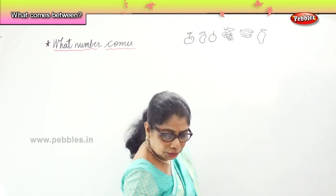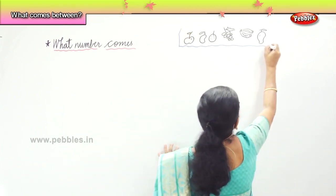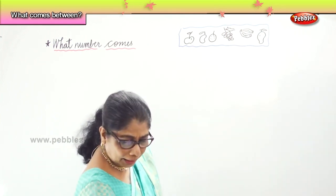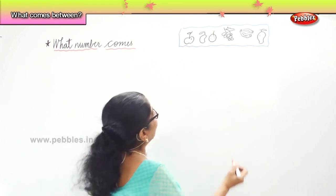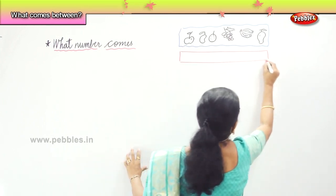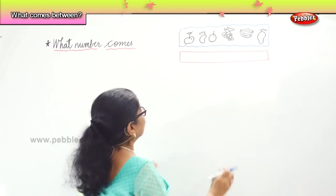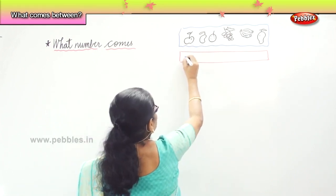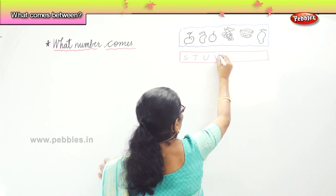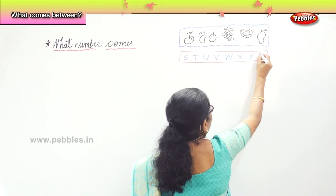Now look at this. I have a box of fruits here. Look carefully at the box. Then I have another box here, and I am going to put some alphabets in it, but not in order. So I will write: C, S, T, U, V, W, X, Y, Z.